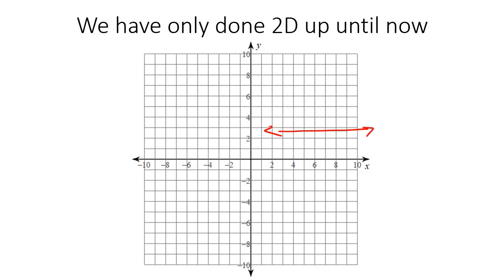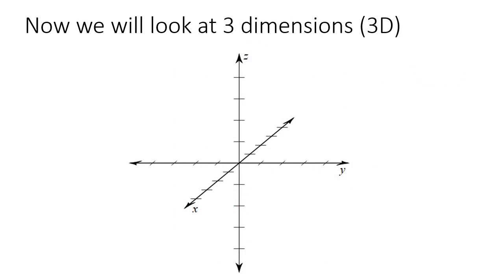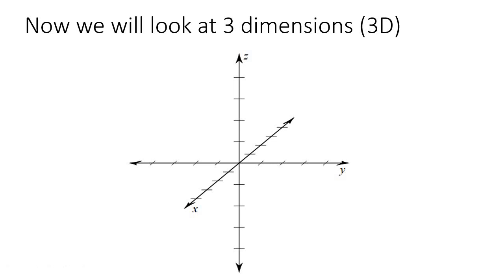We had a horizontal, which we called X, and then we had a vertical, which we called Y. So we had horizontal and vertical — two dimensions. Now, we are going to start looking at three dimensions. So here we have X and Y. The X actually goes into the page or out of the screen. The Z now goes up and down, and the Y goes left and right. So we still have left and right, which is horizontal, and up and down, which is vertical. But now we also have into the screen and out of the screen — a third dimension, which we call 3D.